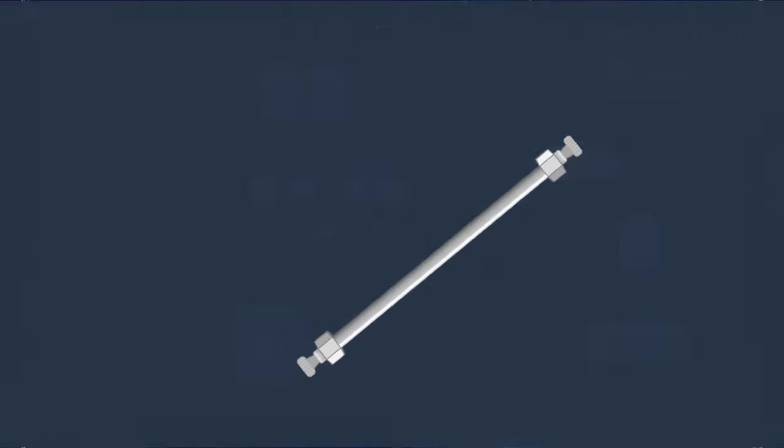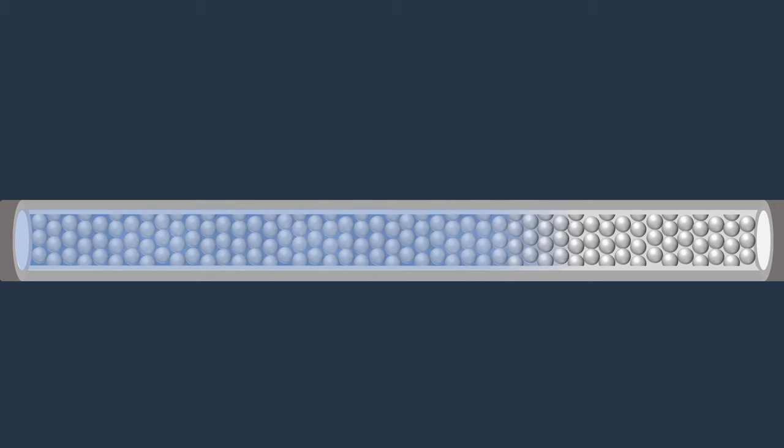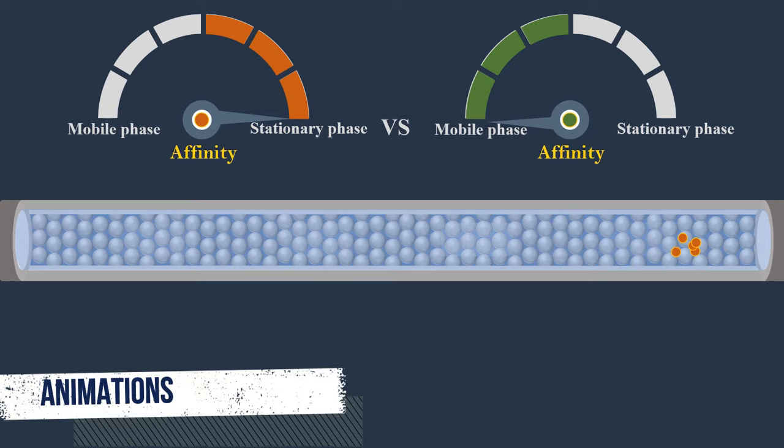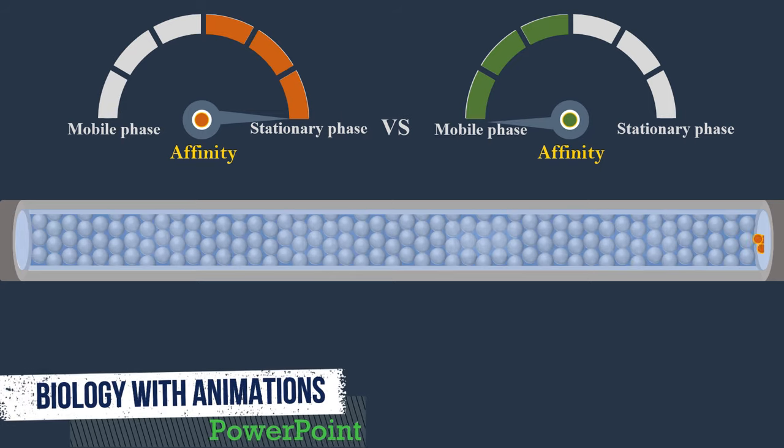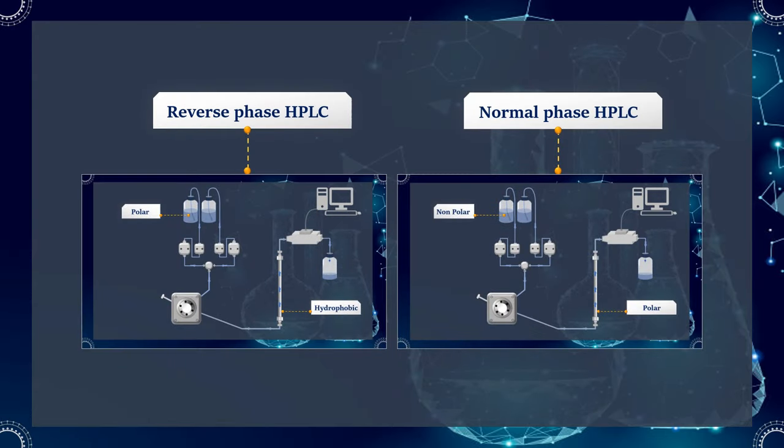The separation is based on differential partitioning of the sample components between the mobile and stationary phases. The component which has more affinity to the mobile phase, consequently less affinity to the stationary phase, travels faster and elutes out first. And the component which has more affinity to the stationary phase, consequently more interaction, travels slower and elutes later. This separation can be carried out according to which type of HPLC is used.